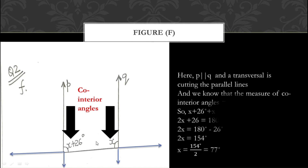According to the property of co-interior angles, the sum of co-interior angles is equal to 180 degrees. Here P and Q are parallel lines and the transversal line has been cut. We know co-interior angles sum to 180°. The equation becomes: (X + 26°) + X = 180°.